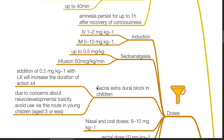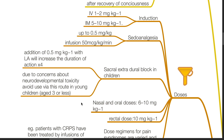Doses. For induction, the IV dose is 1 to 2 mg/kg and the IM dose is 5 to 10 mg/kg. For pseudoanalgesia, ketamine can be given up to 0.5 mg/kg, or an infusion rate of up to 50 mcg/kg/minute. Sacral extradural block in children: the addition of 0.5 mg/kg with local anesthetic will increase the duration of action of the local anesthetic by up to 4 times, but due to concerns about neurodevelopmental toxicity avoid use via this route, especially in young children aged 3 or less. The doses for nasal and oral routes are 6 to 10 mg/kg, and rectal dose is 10 mg/kg.